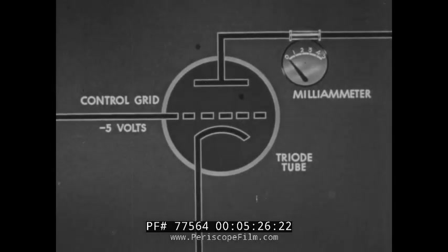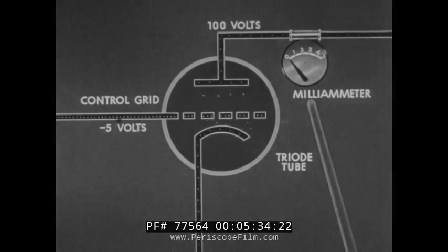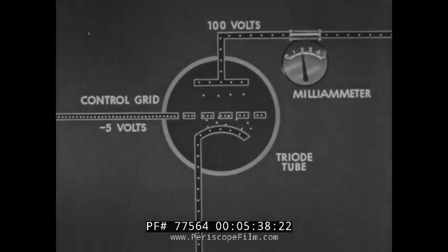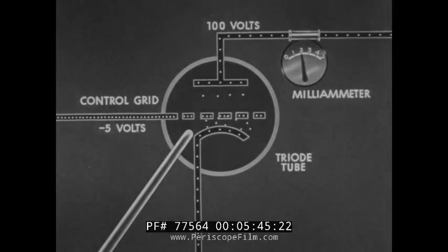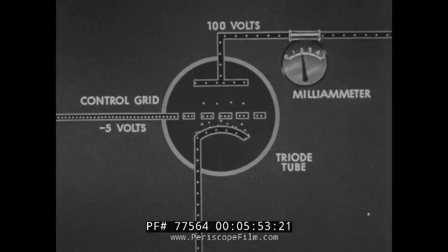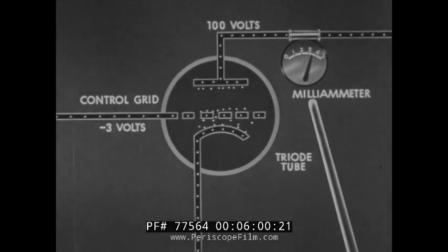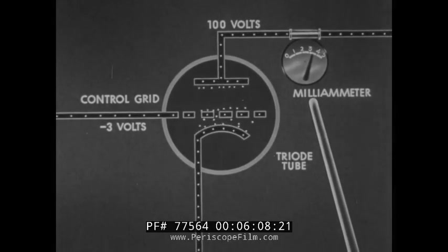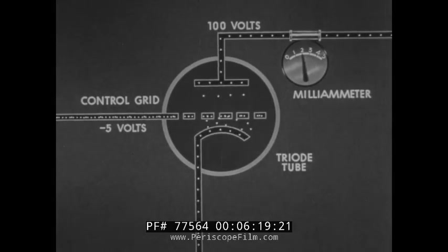With a bias of minus five volts on the grid and the plate impressed by 100 volts, the milliamp meter shows a plate current of two units as electrons flow from cathode to plate. The grid contains many electrons constituting a negative charge, which limits the movement of electrons from cathode to plate. If we change the grid bias from minus five to minus three volts, the milliamp meter shows a plate current rise to three and a half units. A change of but two volts in the grid bias has resulted in increasing plate current to near its maximum — a small change in grid voltage leads to a large change in plate current.